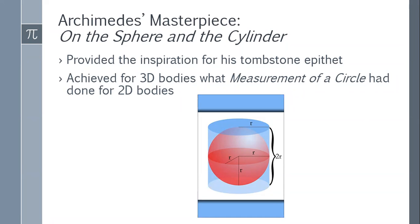Archimedes was the first person to actually prove the formula for the area of a circle. Before Archimedes, people knew pi as the ratio of the circumference to its diameter — they knew it was constant. Archimedes shocked the world when he announced that the formula for circular area also involved that same constant pi. That same constant appears not only in the one-dimensional circumference formula but also in the two-dimensional measurement of area.